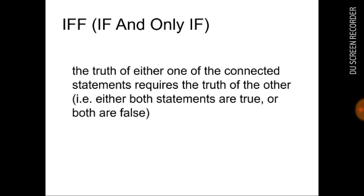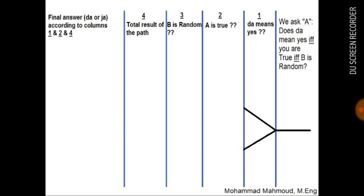I made this first table to get all the possible paths that will lead to an answer of Da or Ya by A. The table starts from right to left. Column one has Da means yes or not. Column two has A is True or not. Column three has B is Random or not. Column four has the total result of each path. And the last column has the answer of A — Da or Ya — according to the first, second, and fourth columns.